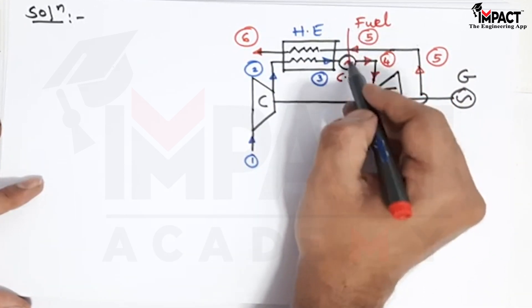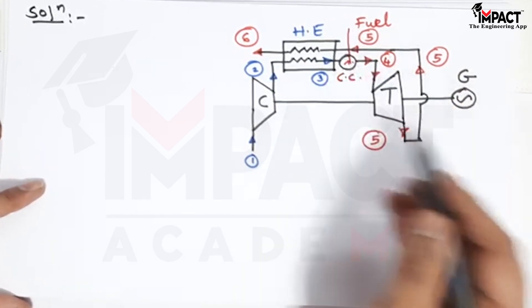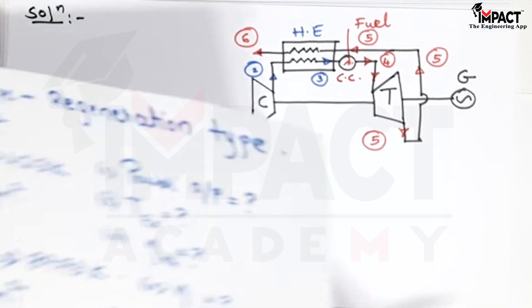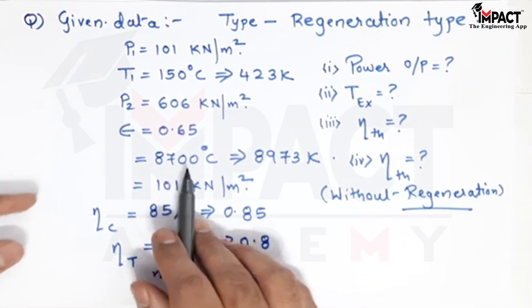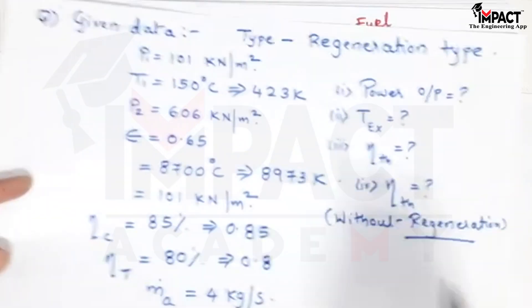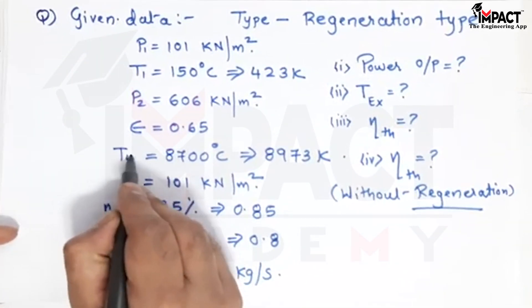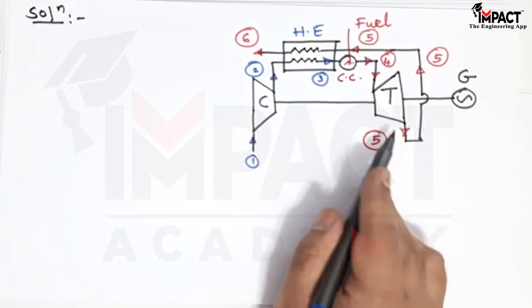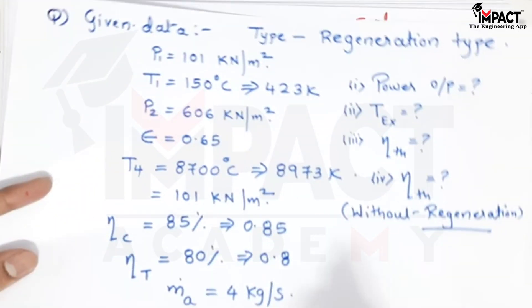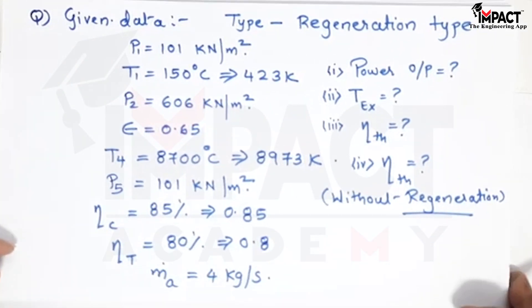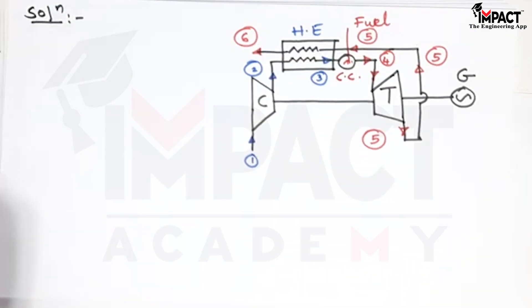In this way the heat supplied by the fuel is reduced and we get high thermal efficiency. From the notation, the temperature after the combustion chamber is T4. The pressure after expansion puts us at state 5, so P5 is 101 kilo Newton per meter square. Also, P2, P3, P4 are all equal, and P1, P5, P6 are all equal.